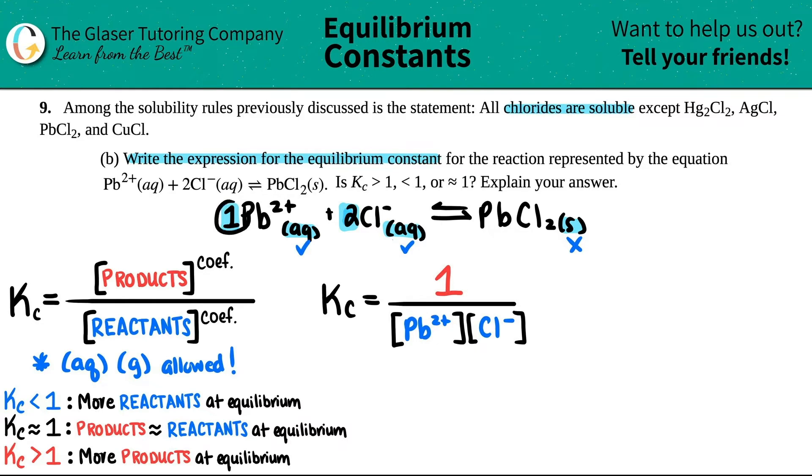You got to raise these to their coefficients. But since anything raised by 1 is just itself, I don't really have to put a 1 next to the Pb. But for the Cl, I have to put a 2 raised to that coefficient. So the chlorine will be squared. And now finally we have our answer.